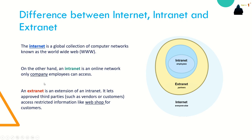We also have some important expressions: internet, intranet, and extranet. What are the differences between them? The internet is a worldwide connection of interconnected networks, also known as the WWW or World Wide Web. Intranet is a term used to refer to a private connection of LANs and WANs that belongs to an organization and is designed to be accessible only by the organization's members, employees, or others with authorization. For example, in your company, all employees can communicate together using the intranet.